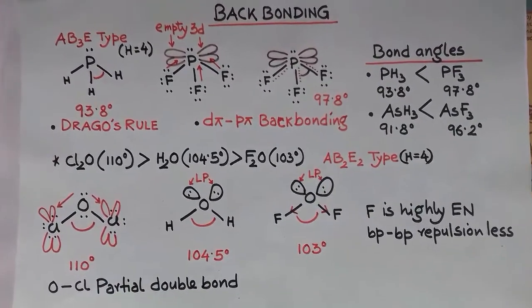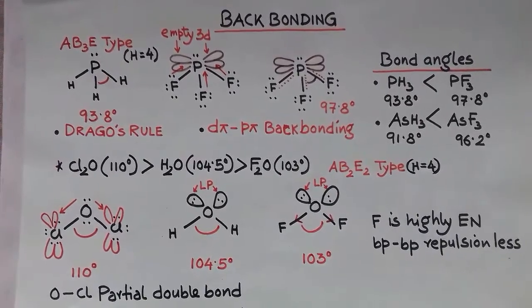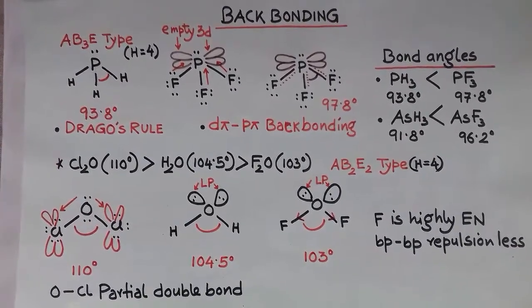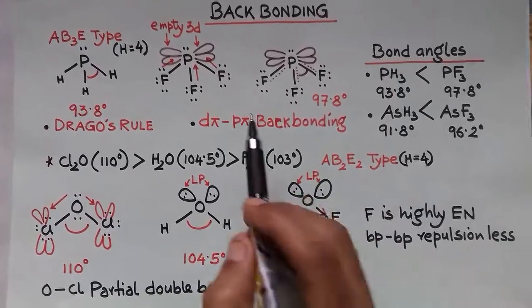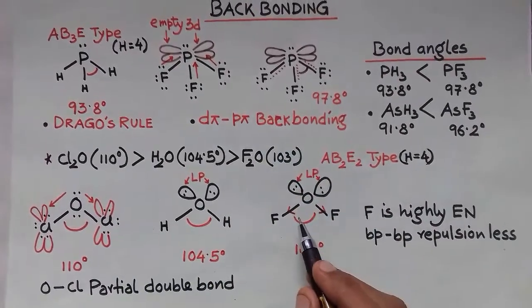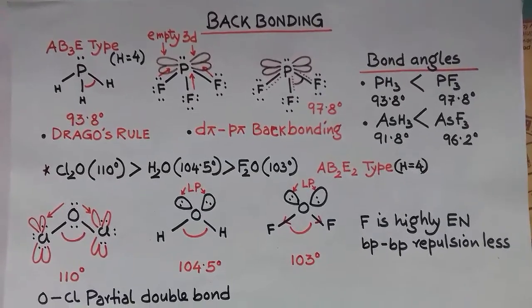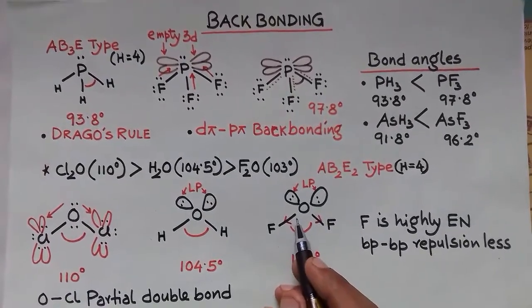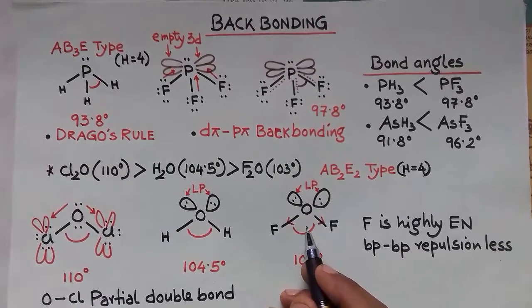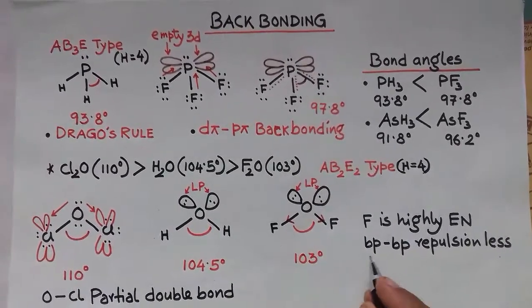So due to backbonding, bond angle increases. Due to normal electronegative atoms attached to the central atom without any backbonding, bond angle decreases. This is also applied in case of ammonia and NF3.